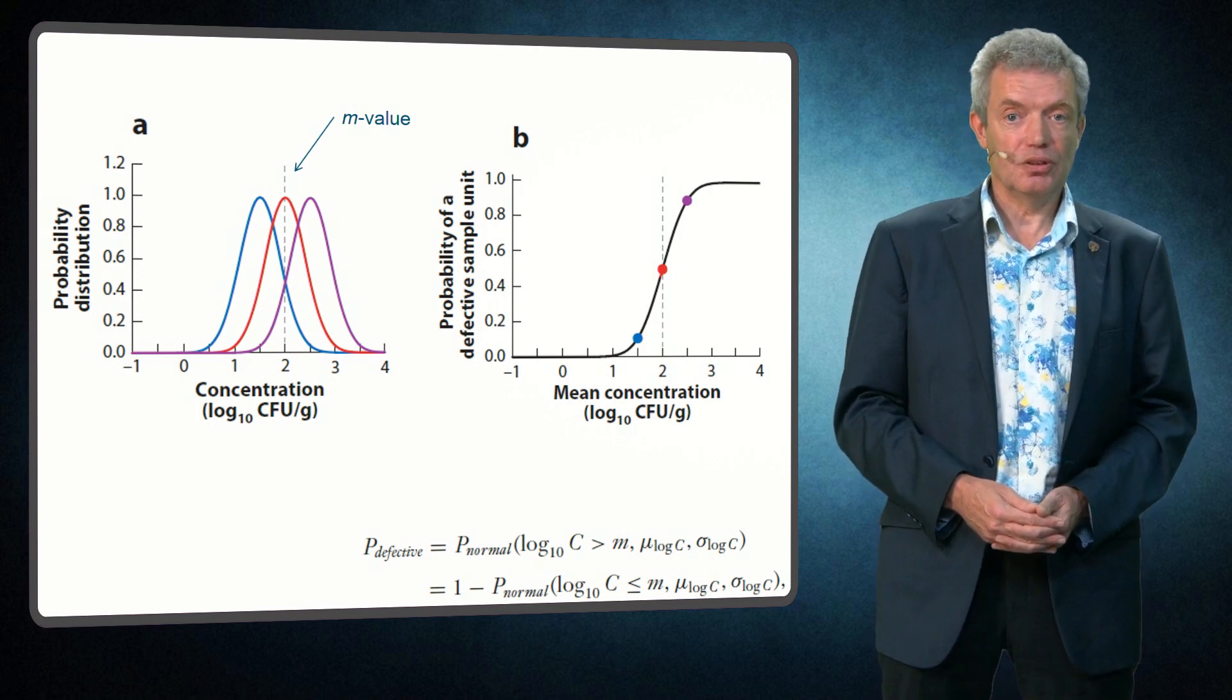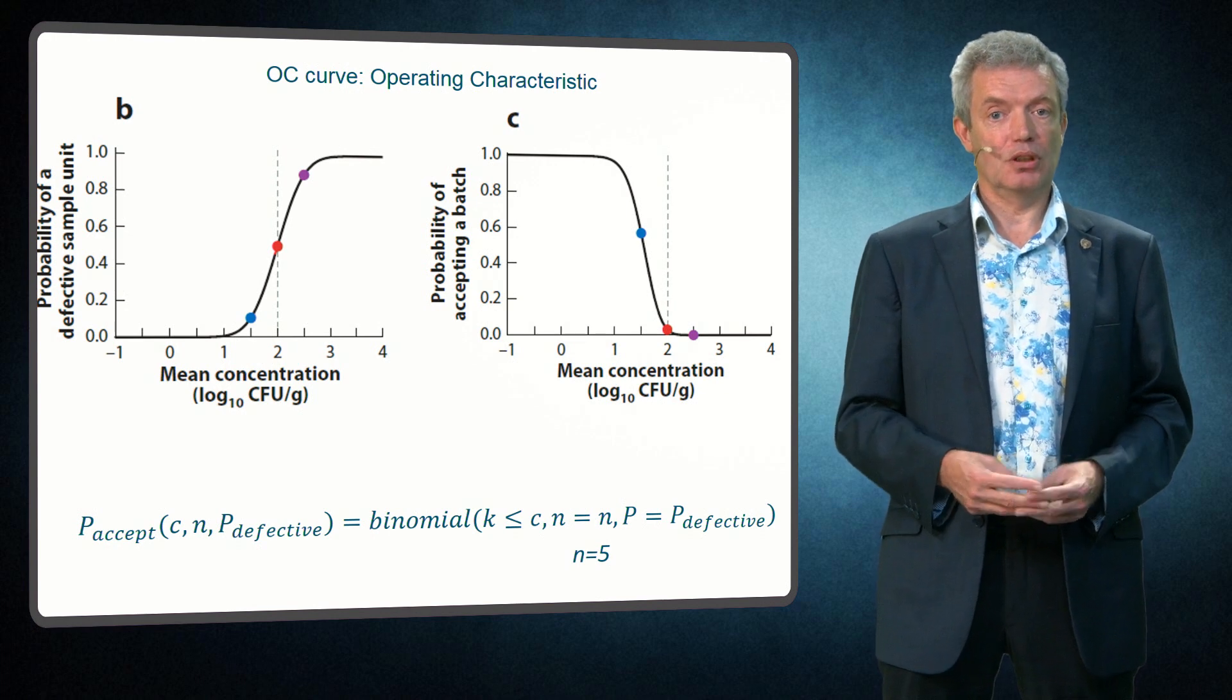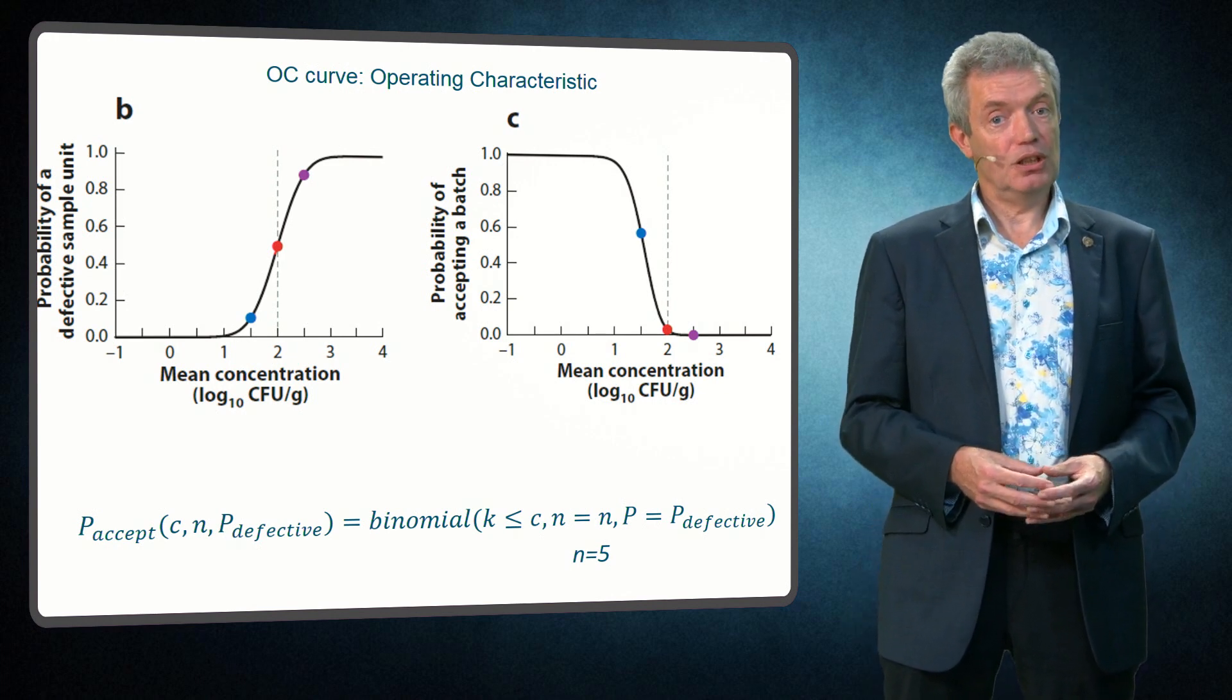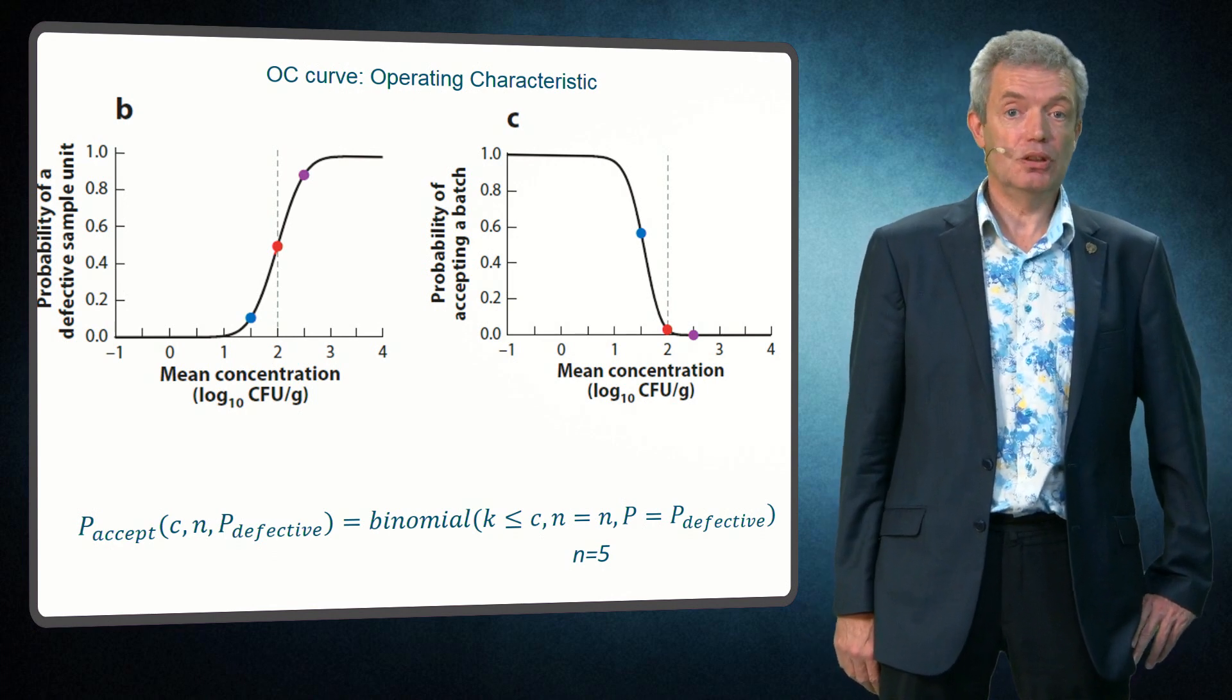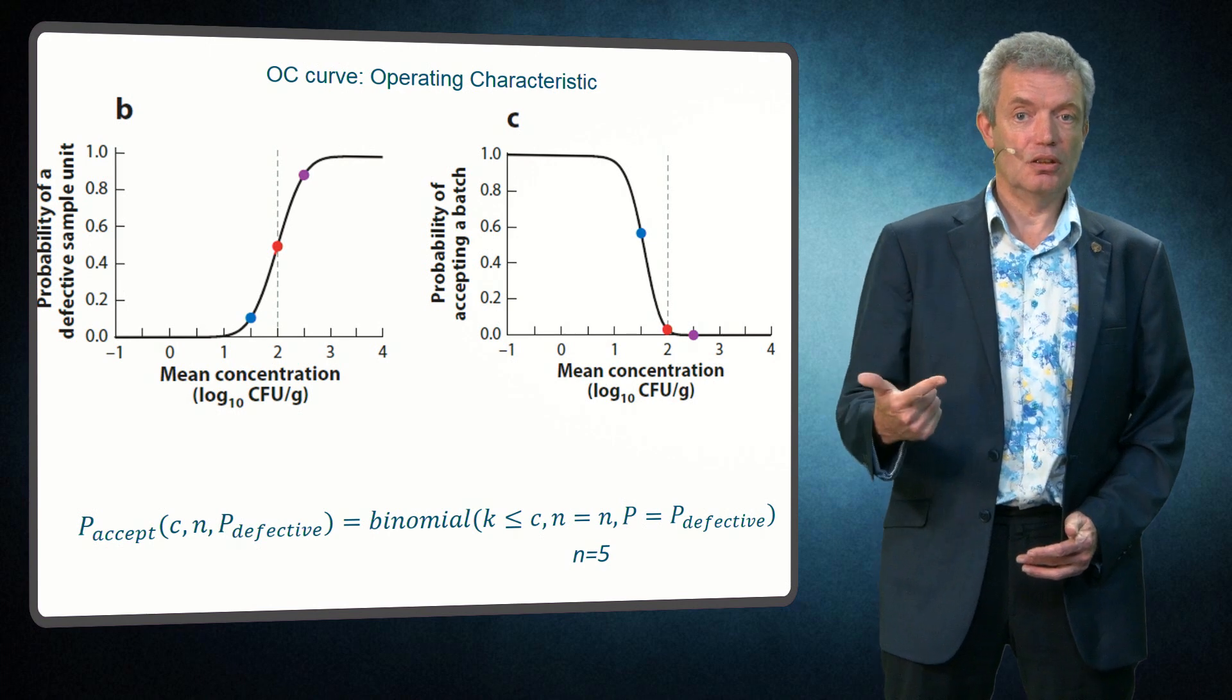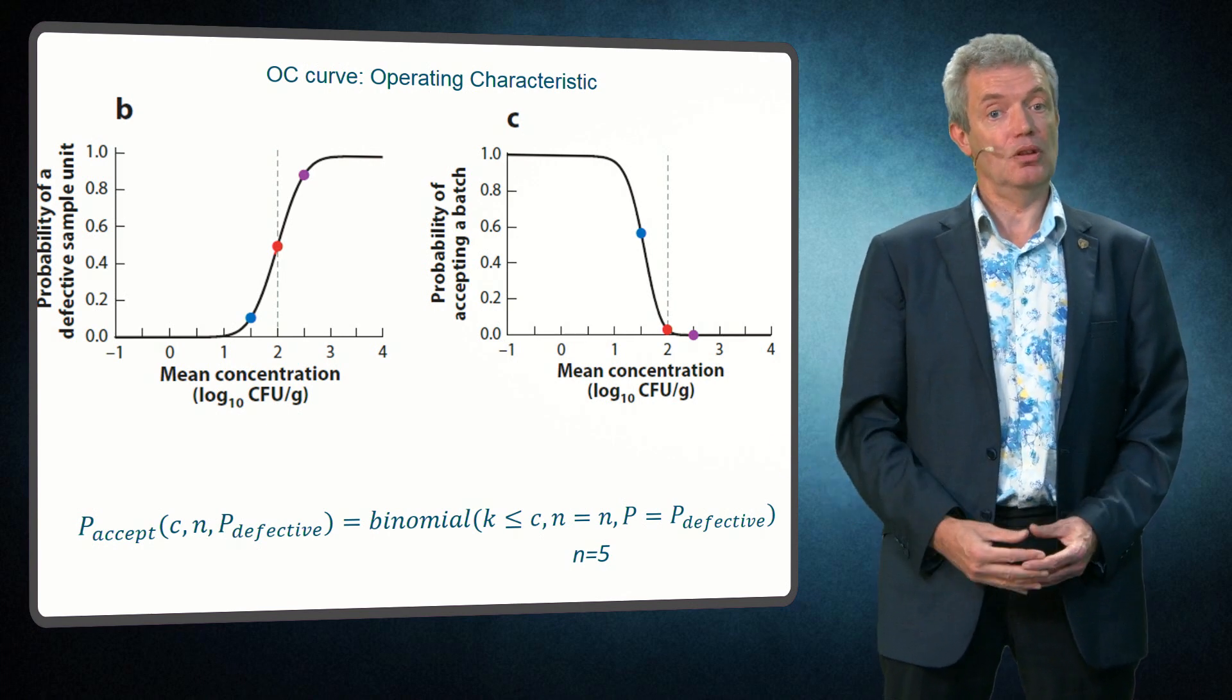But again in the sampling plan we take several samples, so we can make use of this curve now being on the left to determine the OC curve for a higher number of samples, again making use of the binomial function including our N and our C value. And then we can see what type of levels of concentration will most probably be tested as acceptable, and what concentration will most probably result in a rejection. So the procedure consists of three steps: first the description of the distribution of the concentration, second the probability that one sample from that distribution results in a defective sample, and third the acceptance probability of the sampling plan, the OC curve.